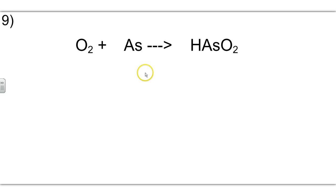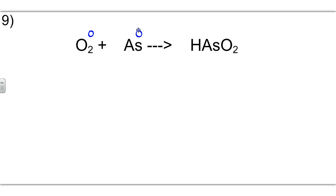Balancing redox reactions in acidic solution, part 2. We're going to assign our oxidation states. Both elements are neutral, so they get a 0. Hydrogen is a plus 1. Oxygen is negative 2.